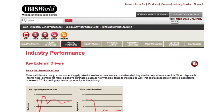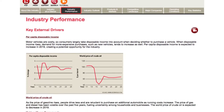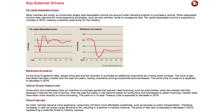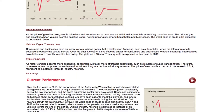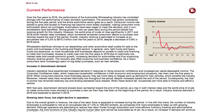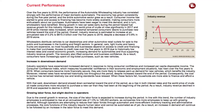For Industry Performance, the section discusses key external factors outside the industry's control that affect the industry's performance, such as consumer trends and spending. It also discusses the industry's current performance over the last five years and the projected growth in the years to come.